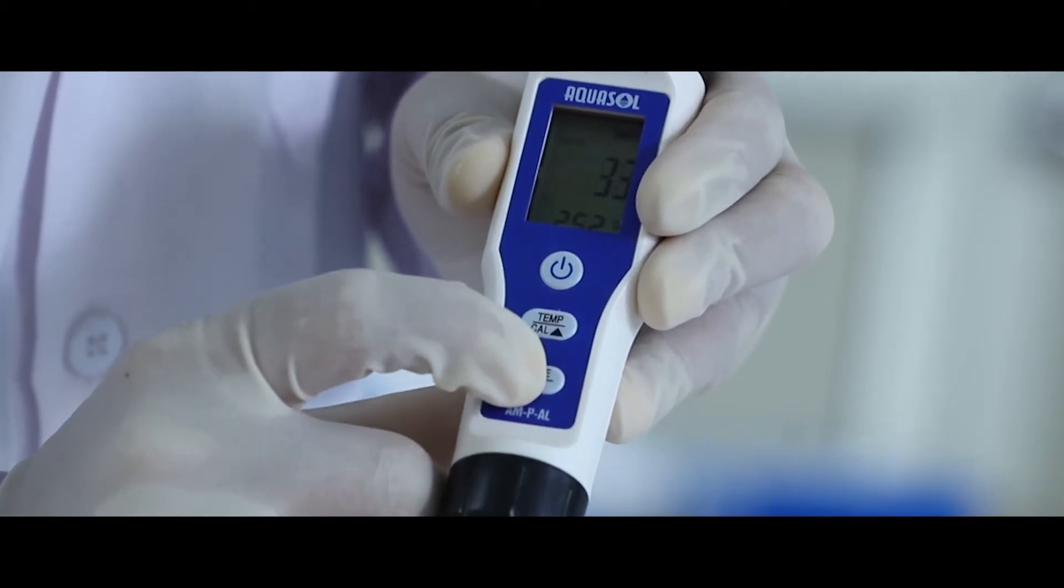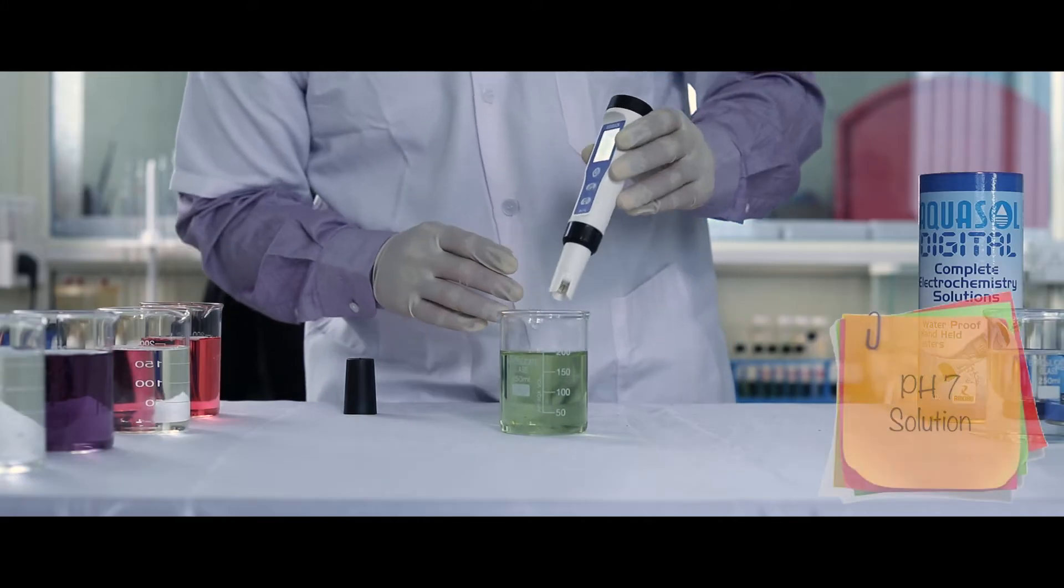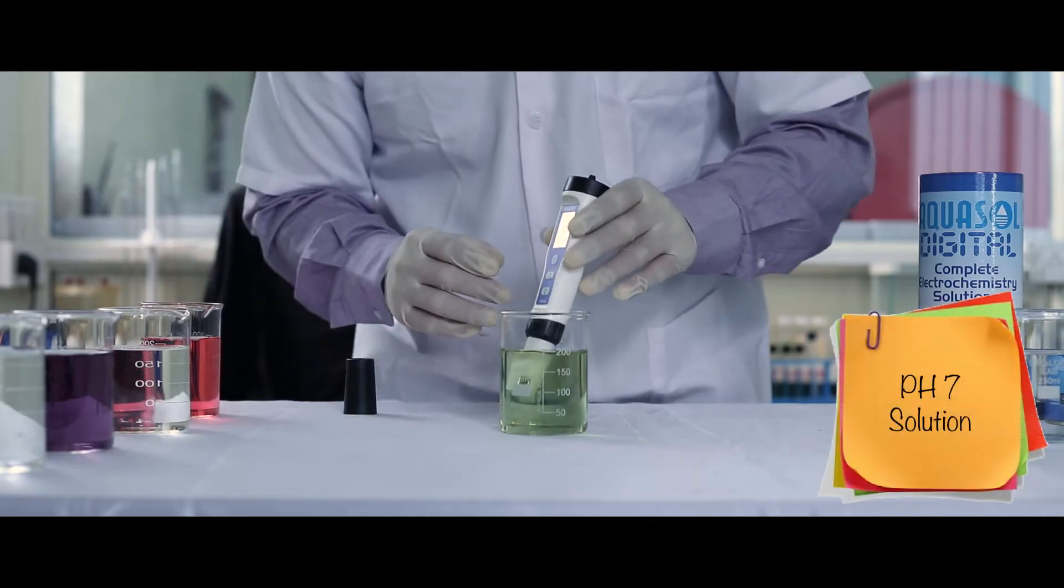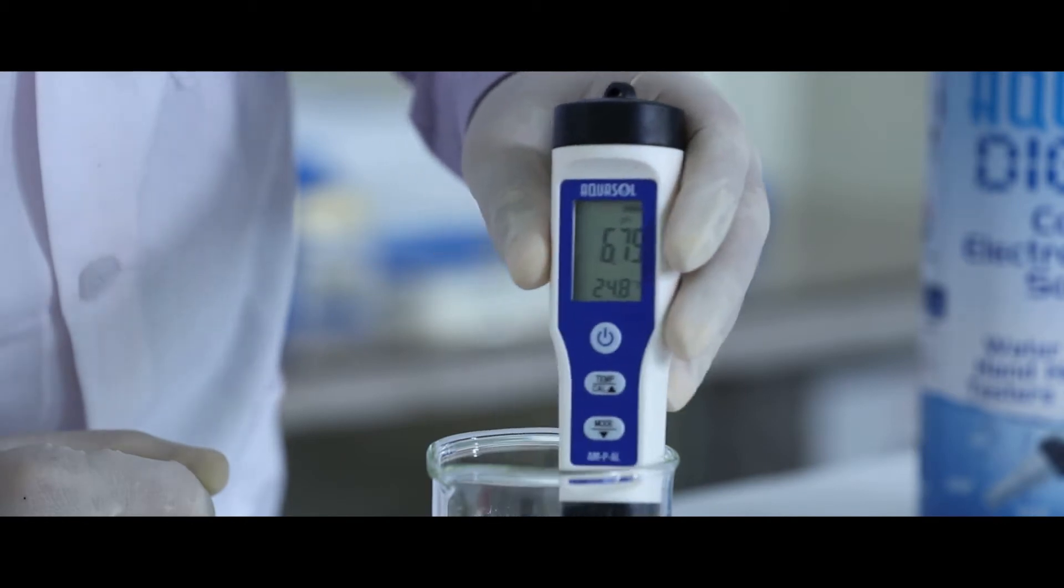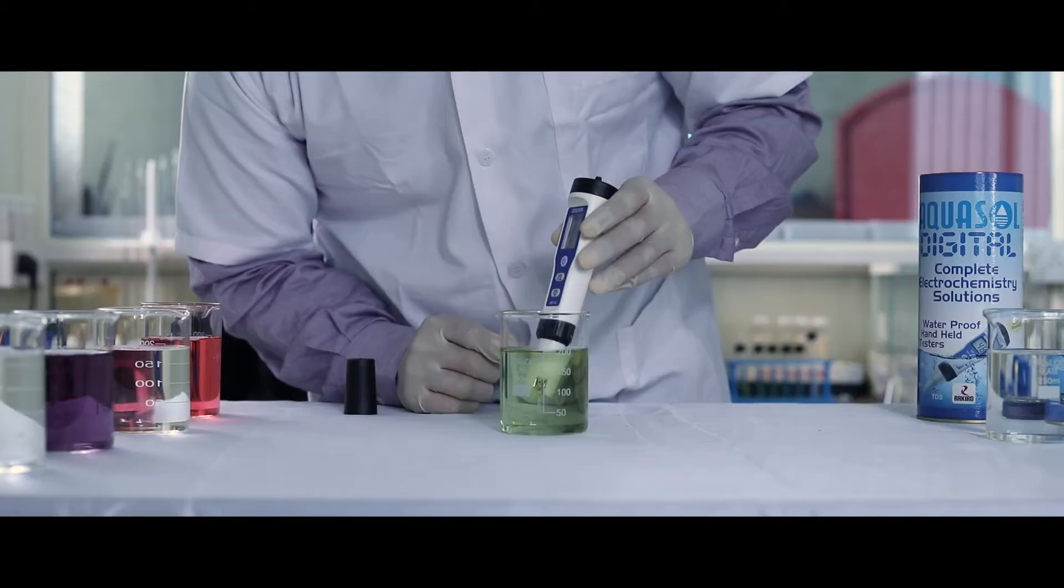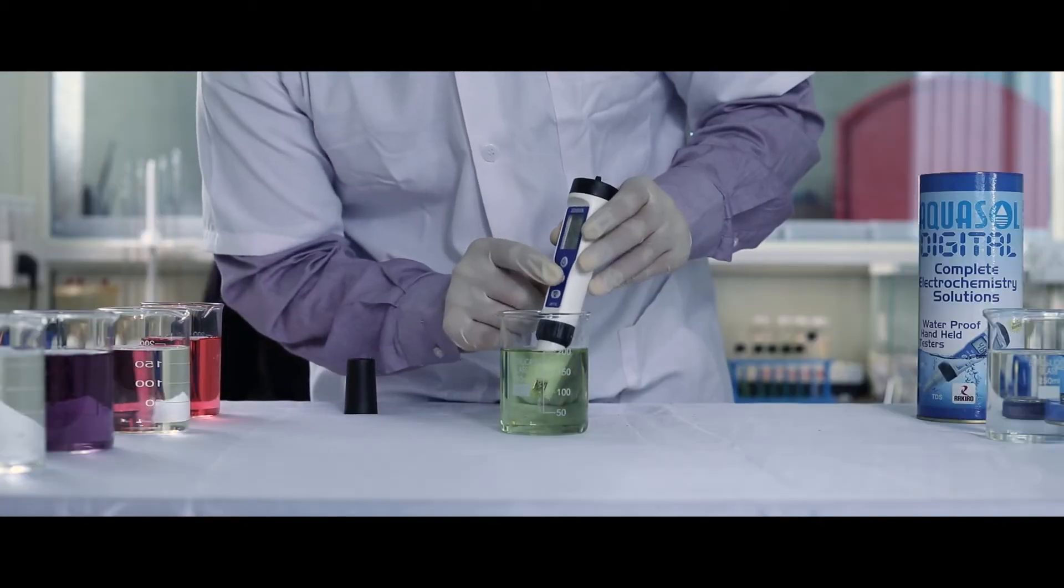Now let's calibrate for pH. Dip the electrode in standard pH 7 solution. Stir gently for stable reading. Press cal key to calibrate.